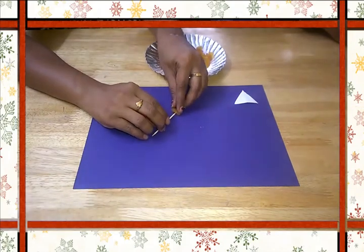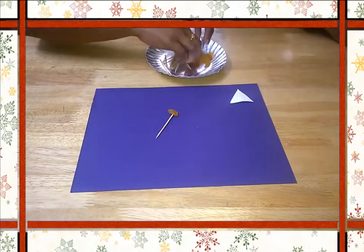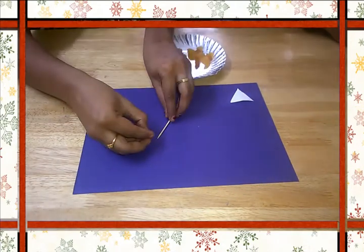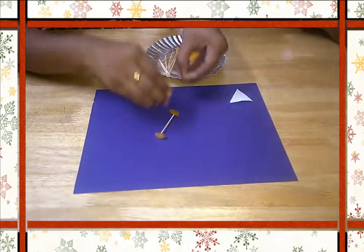The first step is to insert the toothpick into the raisin and we all know that the triangle has three corners.